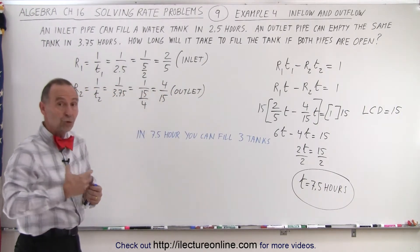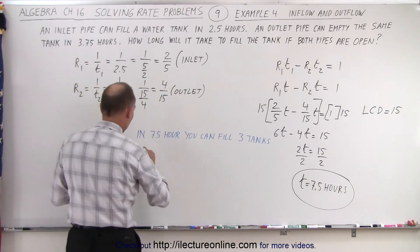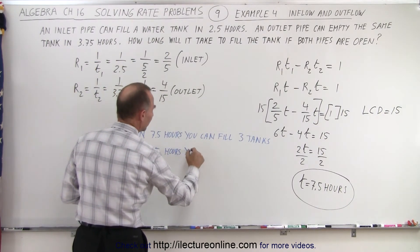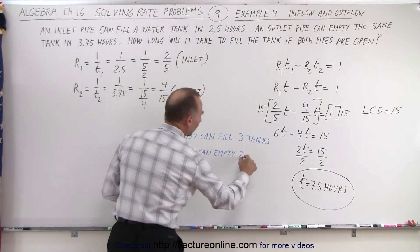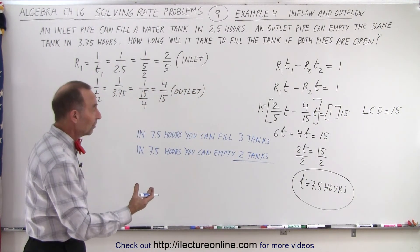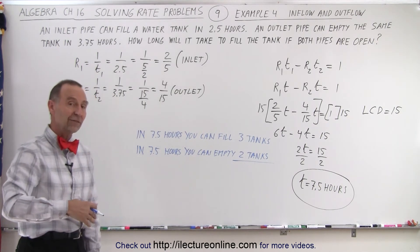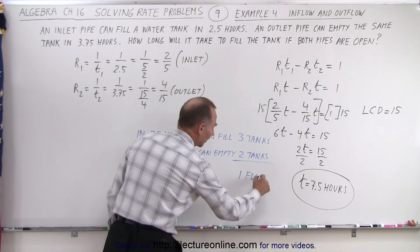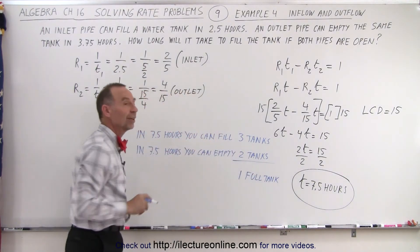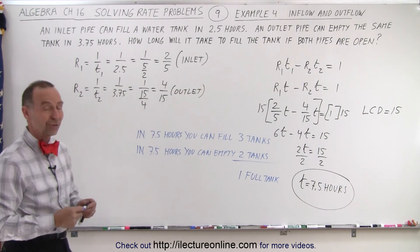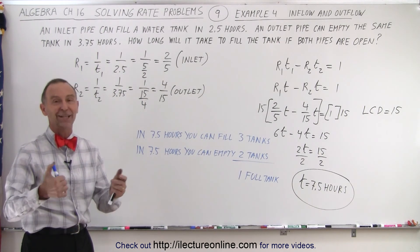So in 7.5 hours, you can empty two tanks. So now when they work together, you fill 3 tanks in 7.5 hours, you empty 2 tanks in 7.5 hours, which means you'll have one full tank in 7.5 hours if you have both inlet pipe and outlet pipe open. That's just another way to look at it. And that's how it's done.